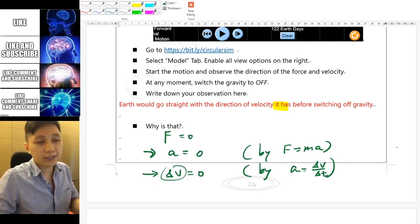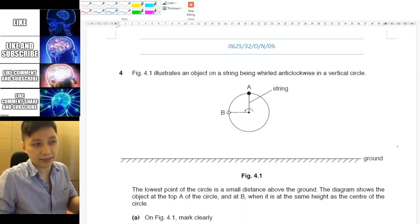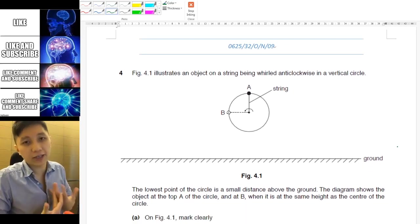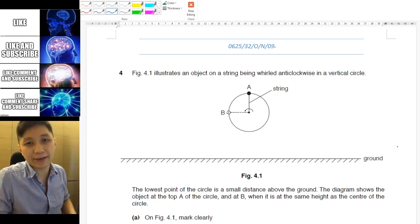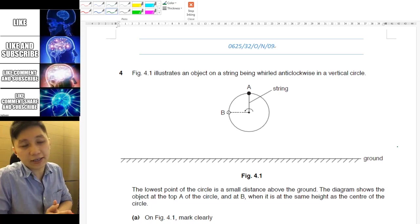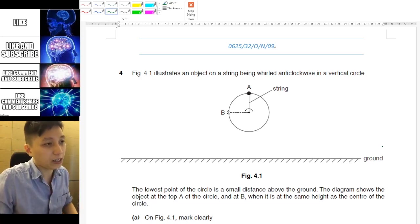Okay, so in IGCSE for circular motion we just have to understand the qualitative idea, so there's no calculation involved. If you are really interested in the calculation, you should go and study a higher physics. To illustrate you what can be asked in IGCSE exam, here is a sample of the past paper question. Pause the video and try it now.